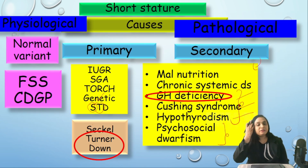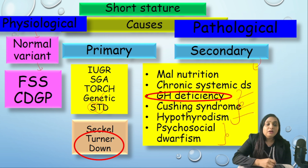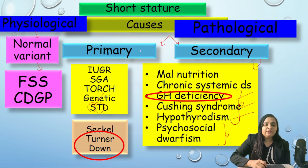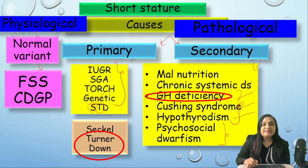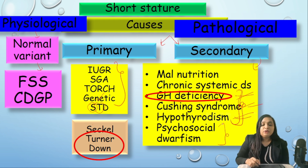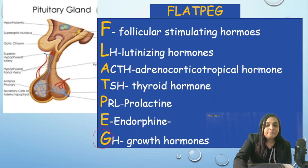This is a revision of the previous lecture. Causes of short stature could be physiological — normal variants like familial short stature or constitutional delay in growth and puberty. Pathological causes are divided into primary, where the child is born with lower growth potential (IUGR, small for gestational age, TORCH, genetic conditions like Turner and Down syndrome), and secondary — acquired causes such as malnutrition, chronic systemic disease, endocrinological conditions (growth hormone deficiency, Cushing syndrome, hypothyroidism), and psychosocial dwarfism due to maternal deprivation.